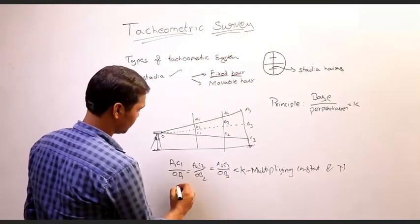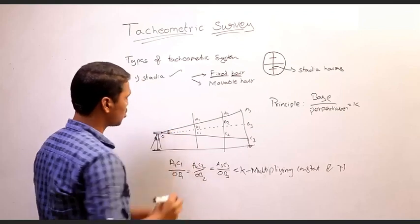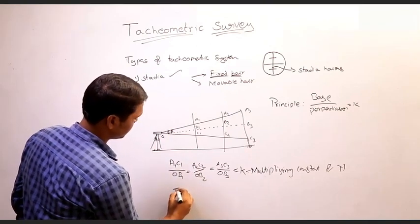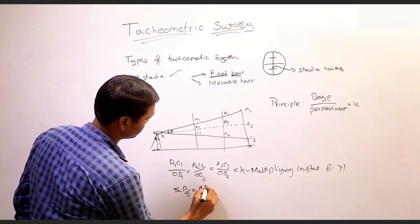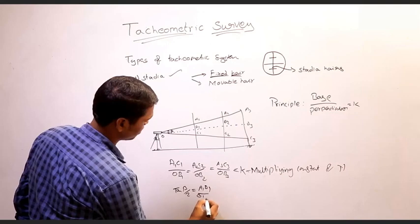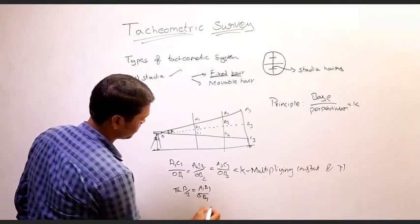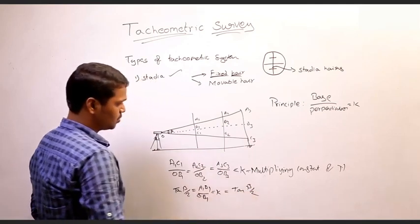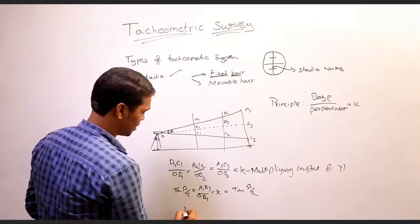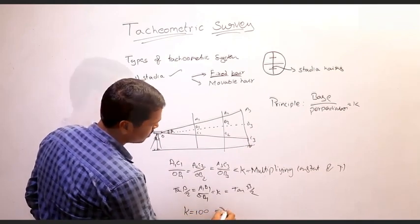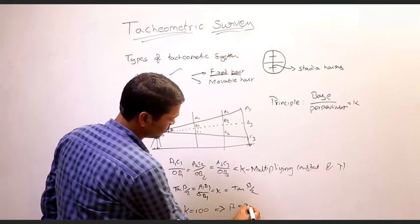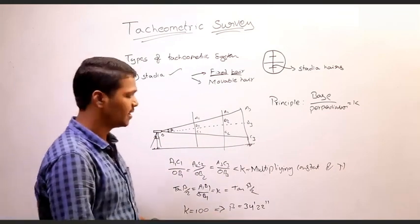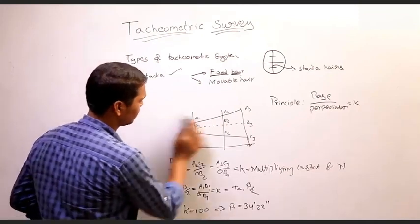The angle subtended between the top and bottom lines of sight is represented by beta. From geometry, tan(beta/2) is equal to (A1B1) by OB1. From this we can say K is equal to tan(beta/2). Usually the multiplying constant K is kept at 100, and for K equal to 100 you get the beta value of 34 minutes 22 seconds.